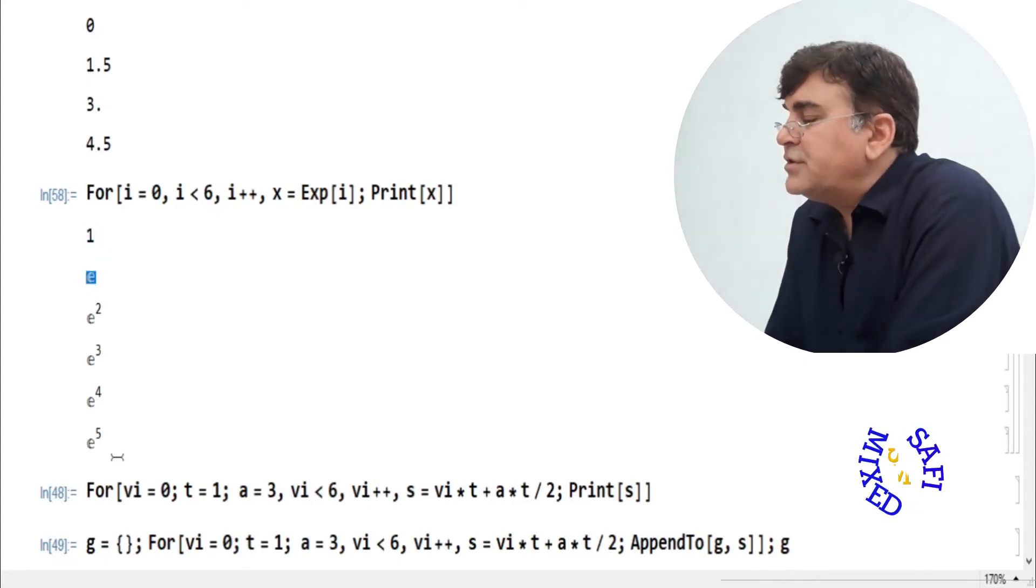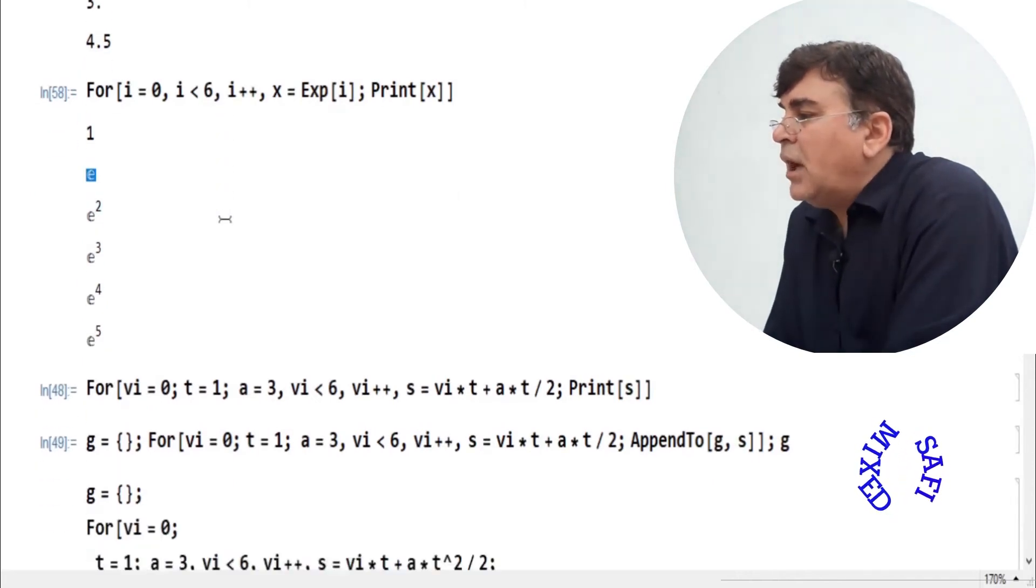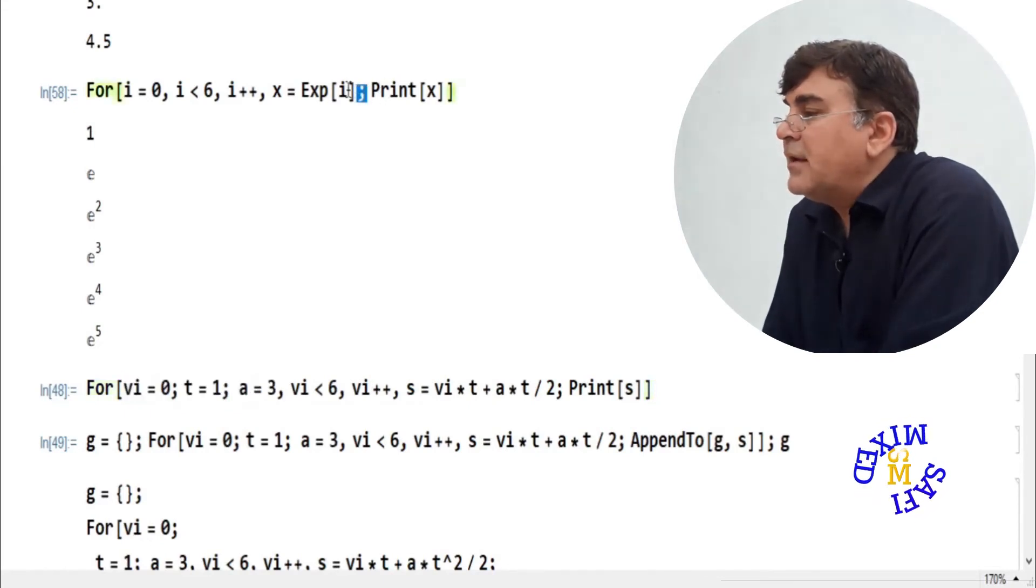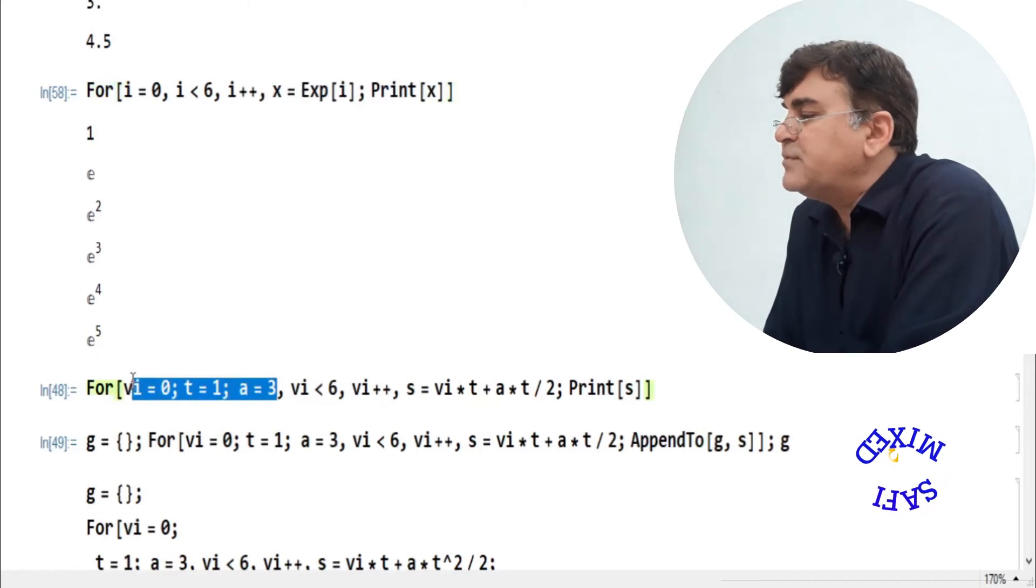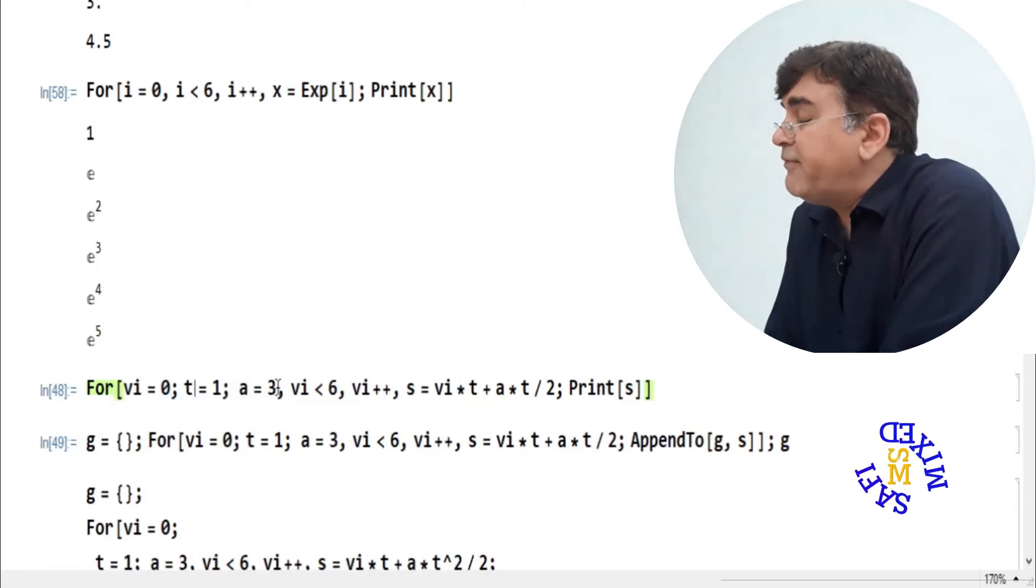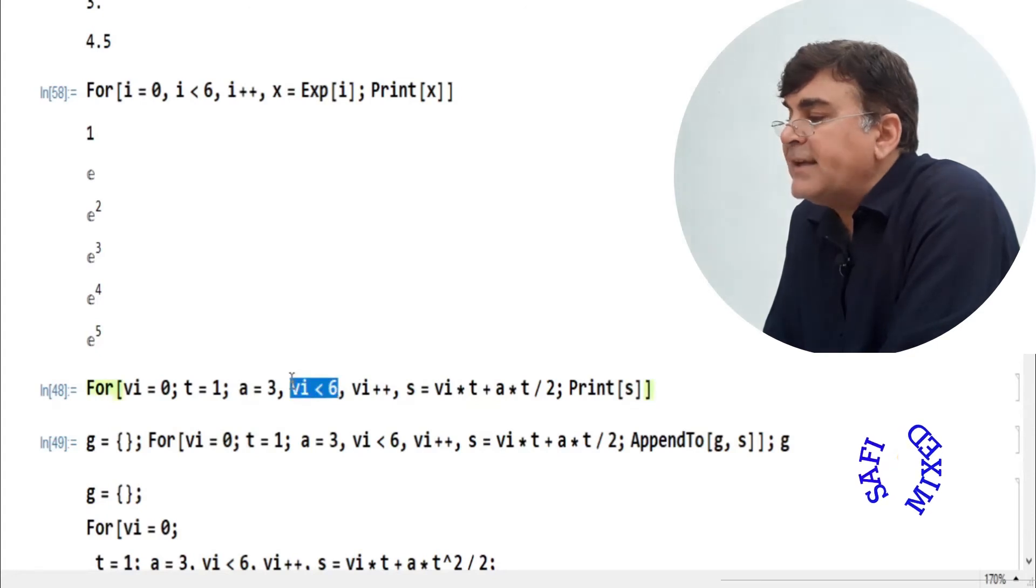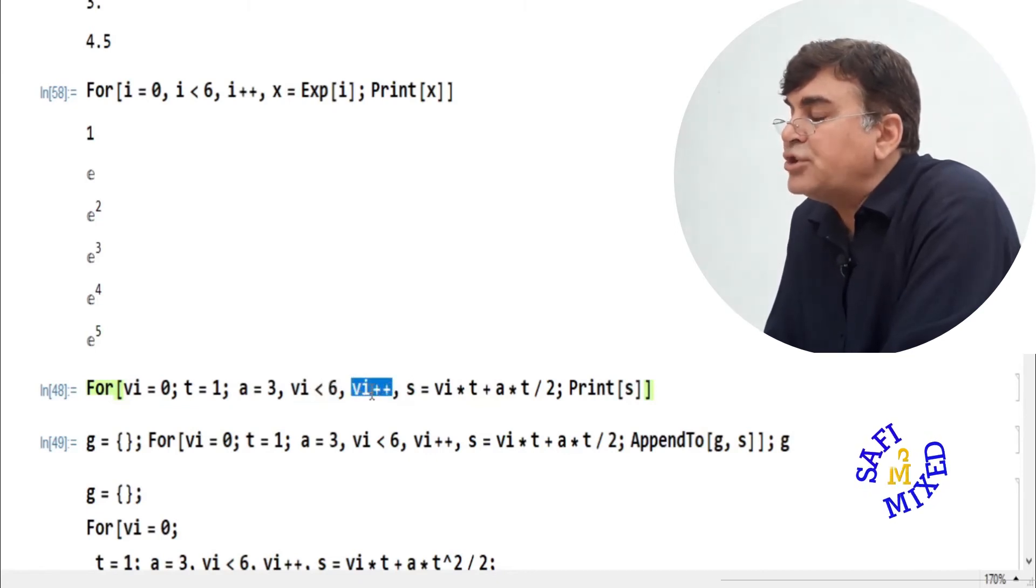Now I want to split the first part into three different sub-parts. Note here also that the sub-parts are separated by semicolon. In the same way I have done in this position where V_I, then semicolon, then T equal to 1, semicolon, and A equal to 3. So the first part of the argument consists of three sub-parts. Then I ask Mathematica to iterate the program for V_I such that V_I should not be greater than 6 and change the value of the iterator V_I by an amount equal to 1.